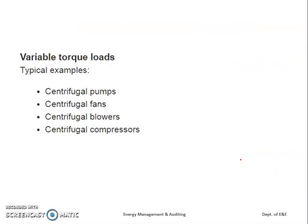Basic examples of variable torque loads are centrifugal pumps, fans, blowers, and compressors. To summarize industrial loads, always keep in mind the three types: constant torque loads, constant power loads, and variable torque loads.